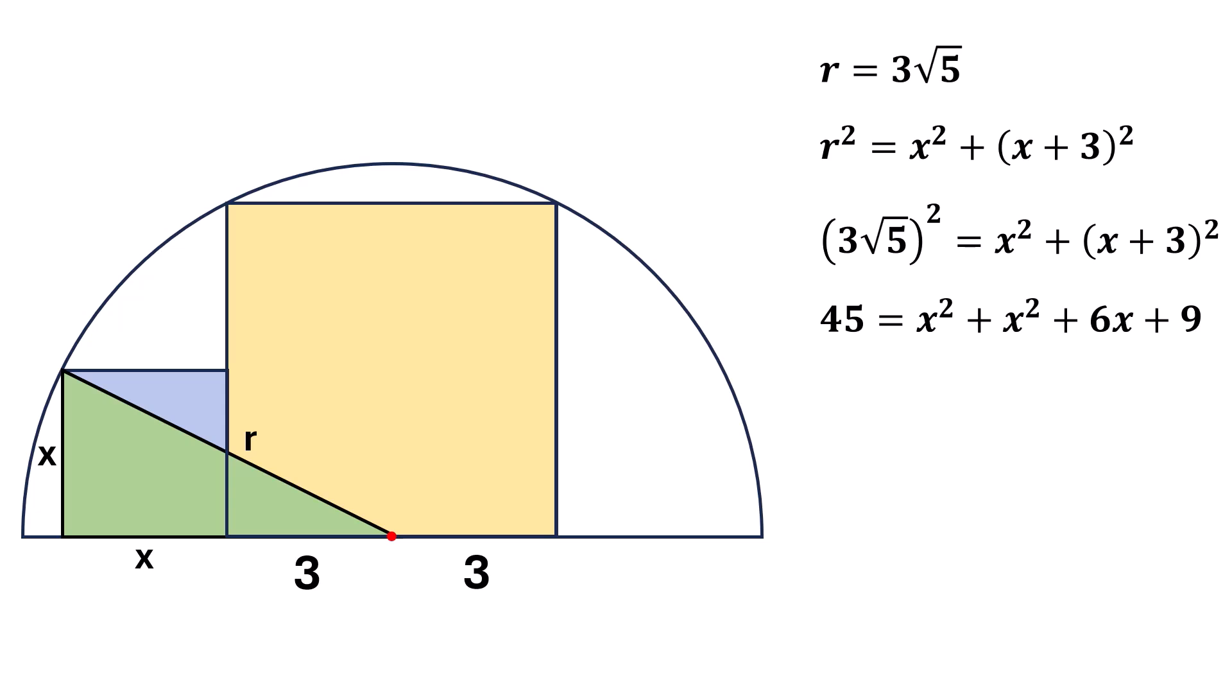Combining like terms, we get x squared plus 3x minus 18 equals 0. Factoring, we have x minus 3 times x plus 6 equals 0. So, x is either 3 or negative 6. But since length can't be negative, the length of the square is 3.